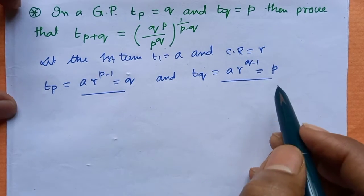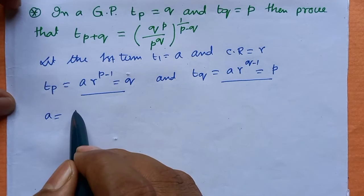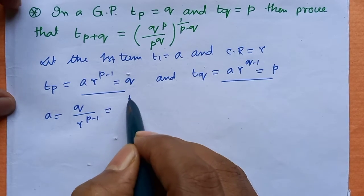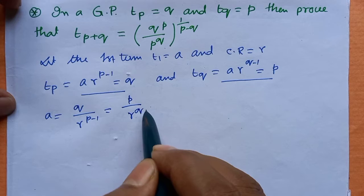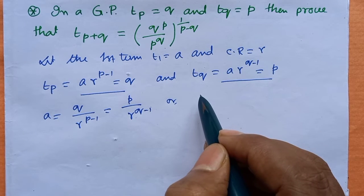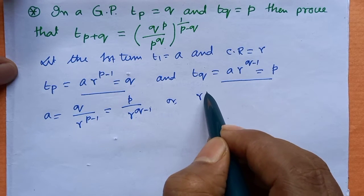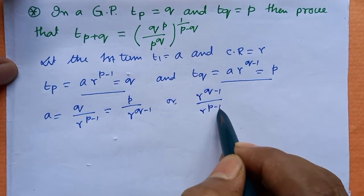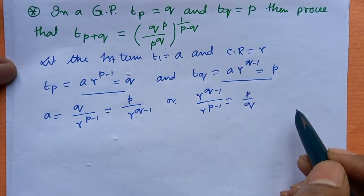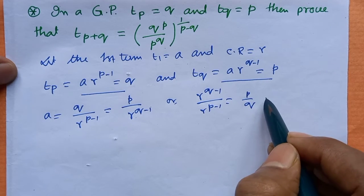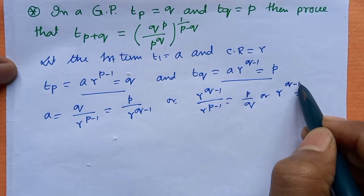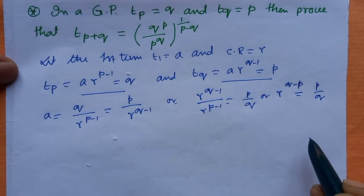Equating a from both expressions, we can write: a equals q divided by r to the power (p minus 1), which equals p divided by r to the power (q minus 1). Therefore, r to the power (q minus 1) divided by r to the power (p minus 1) equals p by q. Hence r to the power (q minus p) equals p by q.